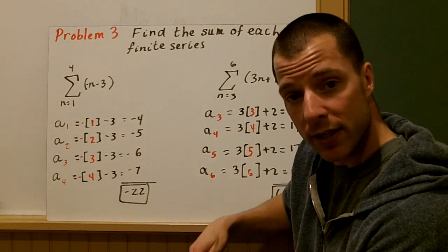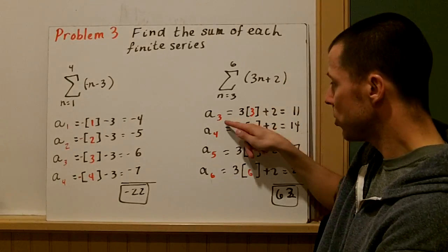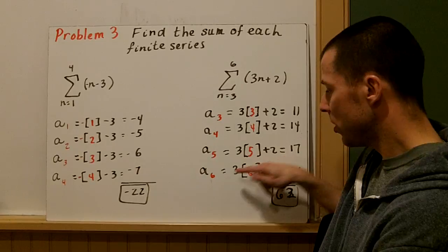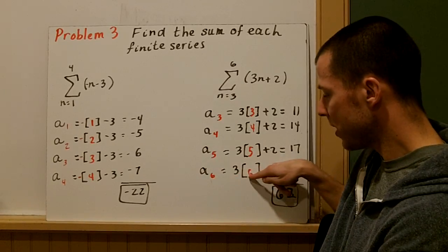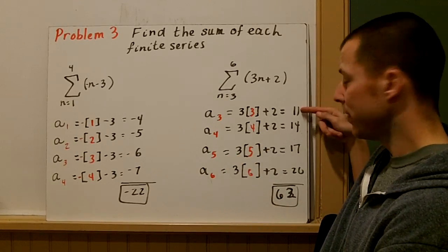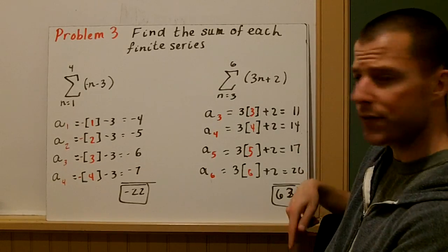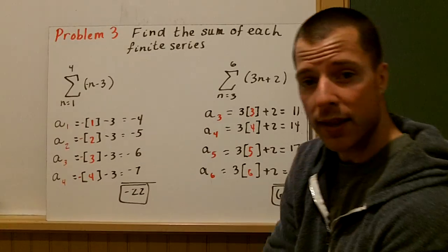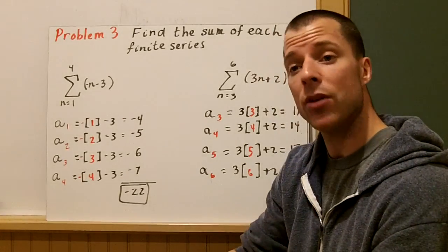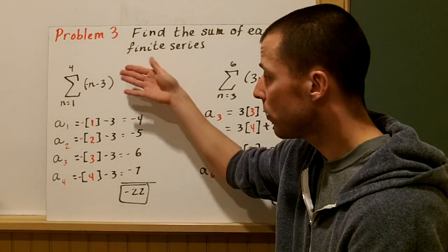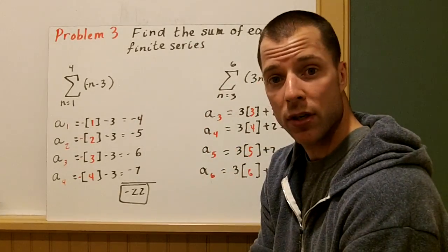Just like I did in the previous example, we're going to substitute 3 in for n. And I go ahead and do that in each case. Notice how the subscript n matches n here. We get 11, 14, 17, and 20 for a total of 62 when we take that sum. So that's how we find the sum of a finite series when we're given the summation formula.